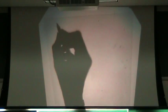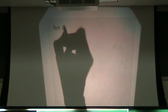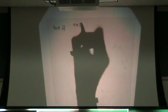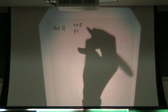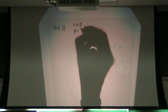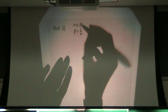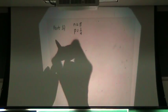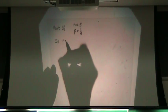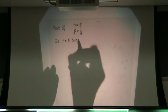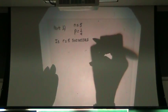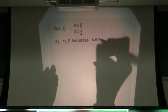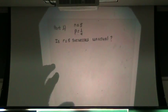N was five. What was P? Was it one-quarter? Yes, one-quarter. And the question was, is r equal to five successes unusual? That's the question, right?